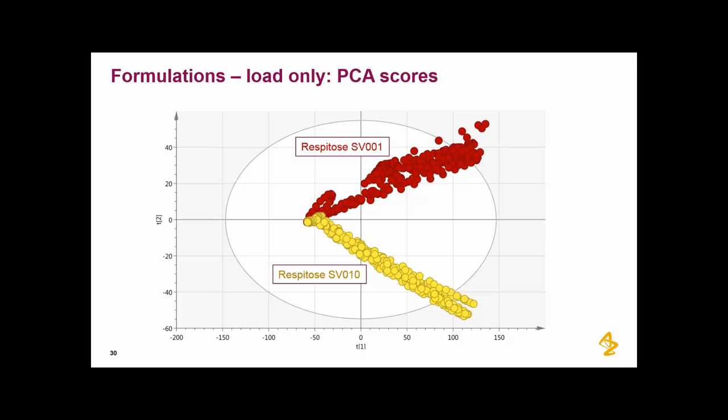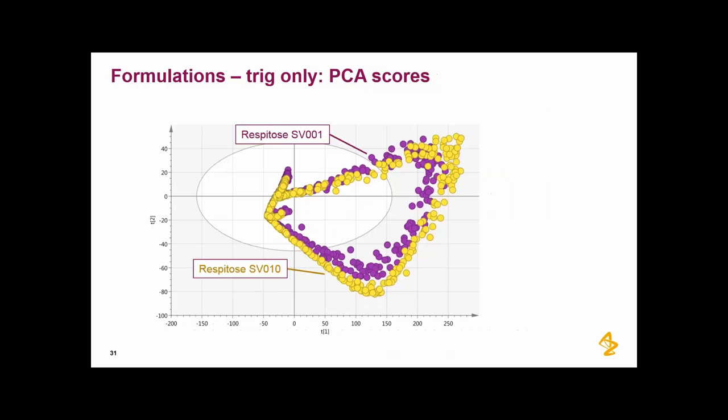So you've seen this slide before for load and a PCA score plot. We see differences between two different carriers. We can hear difference in the sound and we can calculate that. If we look at the trig, when the inhaler really sings and this turbine-like sounds, you can also see a difference in the PCA score plot.